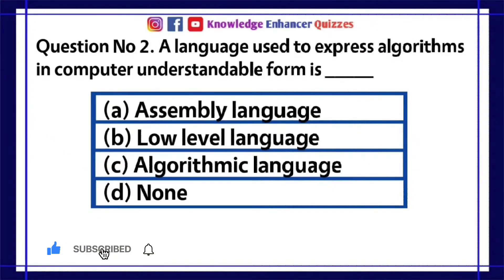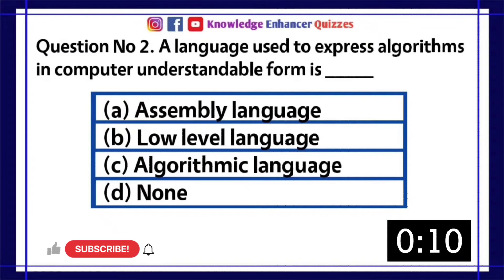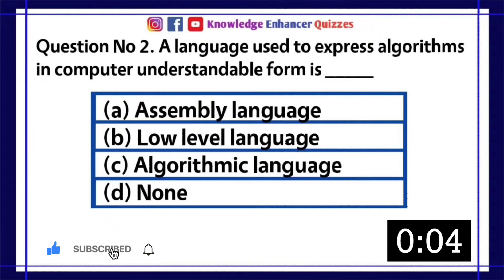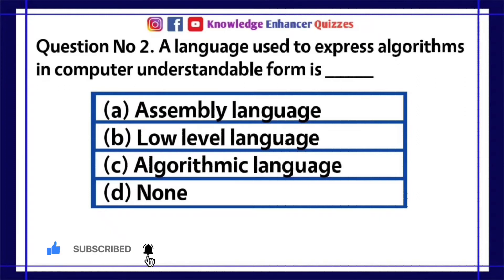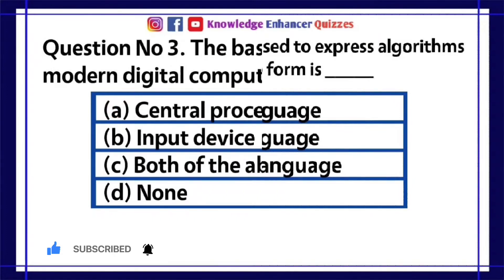Question number 2. A language used to express algorithms in computer understandable form is dash. A. Assembly language. B. Low-level language. C. Algorithmic language. D. None. Option A is the right answer.